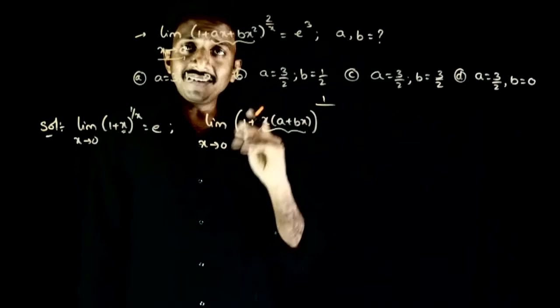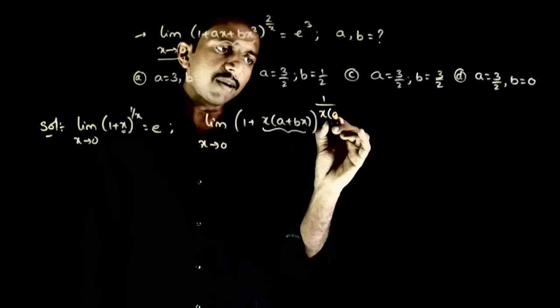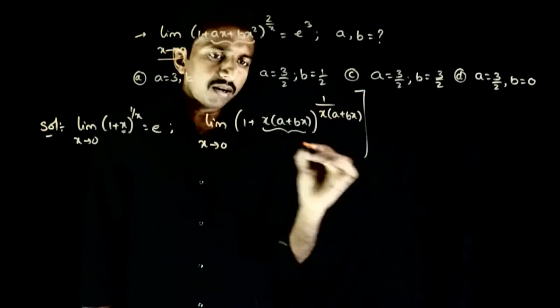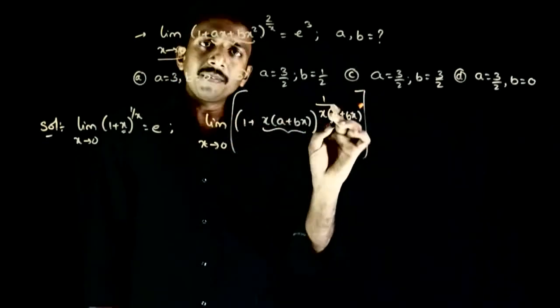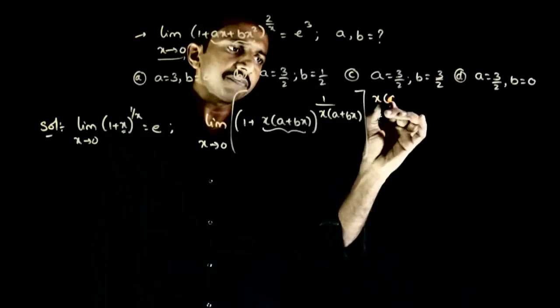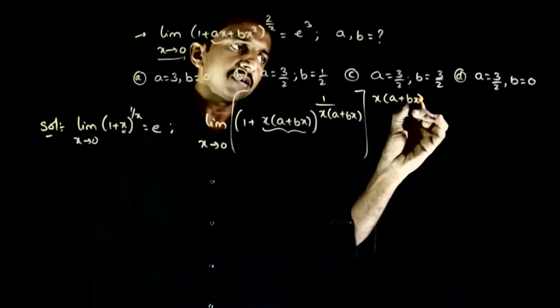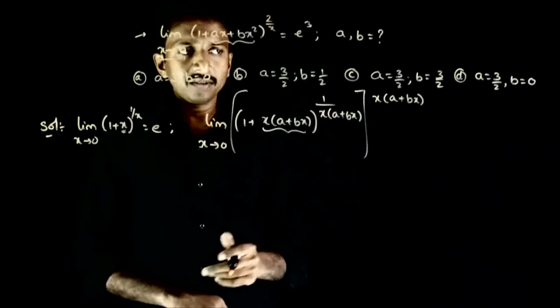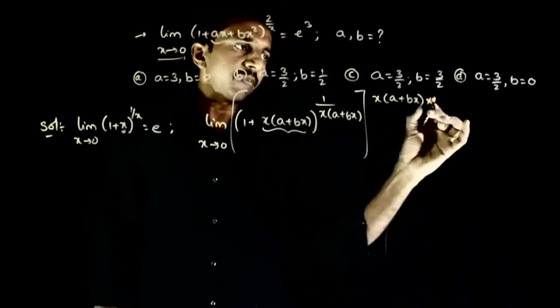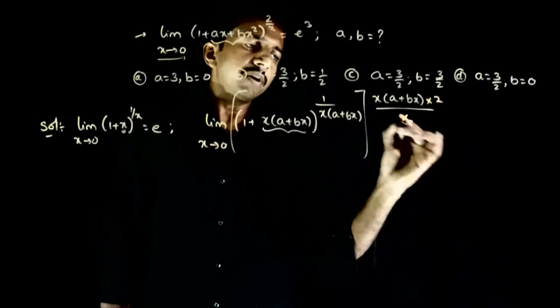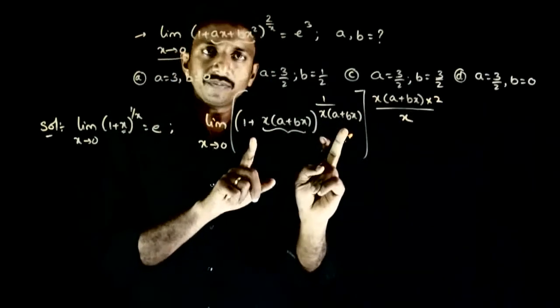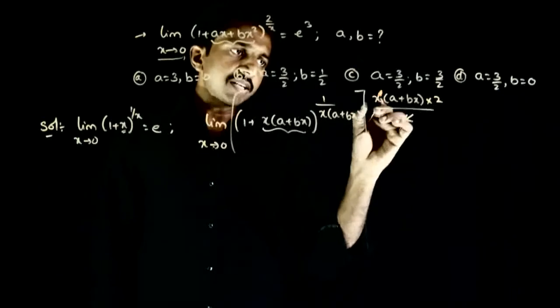Mere paas exactly nahi hai but I will write this 1 by x into a plus bx. Agar 1 by lika toh multiply bhi likta hon a plus bx. Now I have, this by this is 1. Into 2 by x jo power mein hai Woh bhi likta hon Power 2 by x. So this will be equal to e And yaha x or x cancel ho hai.